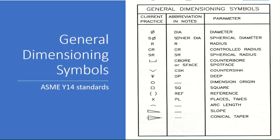For example, the diameter symbol is phi. The sphere diameter has a letter S next to the symbol phi. Radius R is used; if it's a control radius then CR, and if it's a spherical radius then SR. The counterbore or spot face is indicated by an open rectangle, and the countersink is indicated by a V. For the depth of the cut or depth of the thread, we use a horizontal line with a downward arrow attached to it. For the origin of dimensions, especially used for hole tables, we use the symbol O.